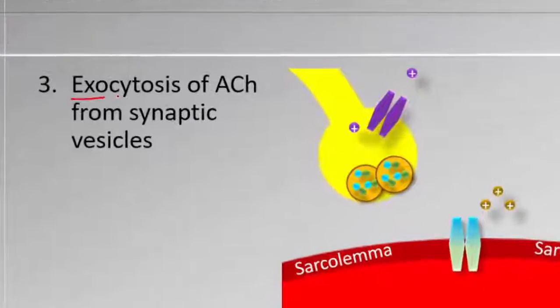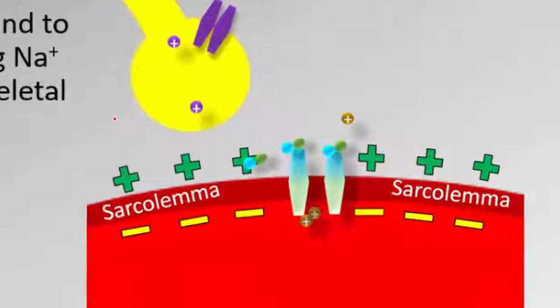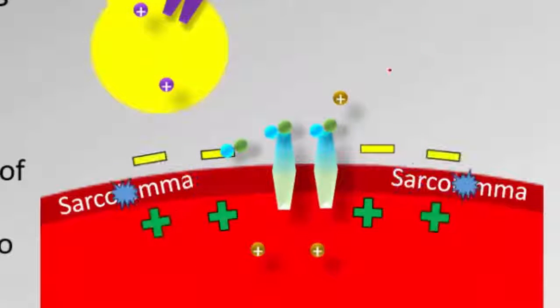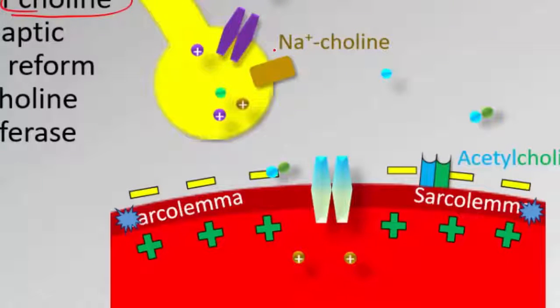Because it causes the exocytosis, the fourth step is this acetylcholine. This influx of sodium will cause it. Again, it leaves the receptor, binds to the enzyme, and it goes in through this transporter.